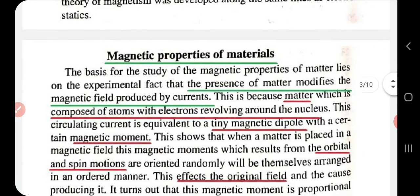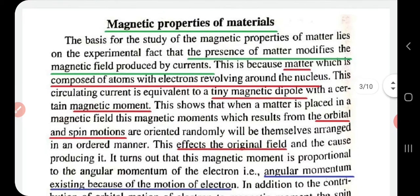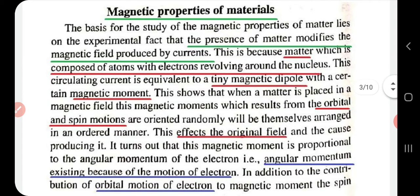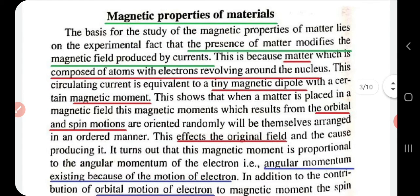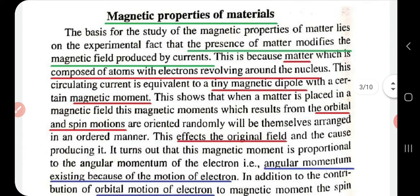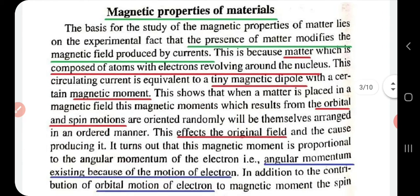Now let us study the magnetic properties of materials. The basis for the study of magnetic properties of matter lies in the fact that the presence of matter modifies the magnetic field produced by current. We know that matter is composed of atoms, and inside an atom we have a nucleus with negatively charged electrons revolving around it.